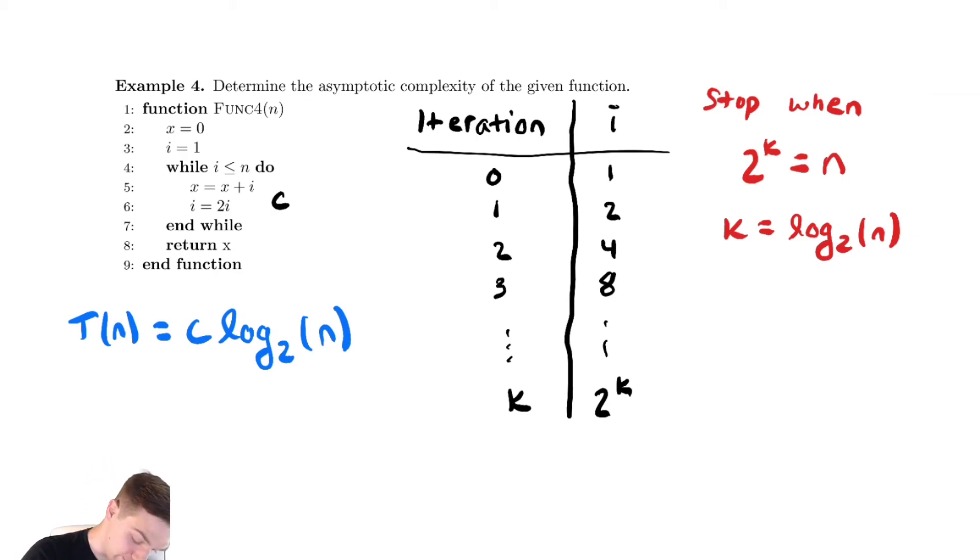So our runtime, t of n, is in theta of log of n. If you wanted to you can make that log base two of n, it doesn't matter a whole lot here though.